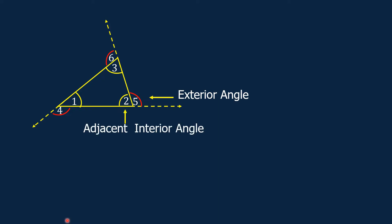Angle 2 is an adjacent interior angle of the polygon. Angle 3 is also an adjacent interior angle of the polygon, and angle 1 is also an adjacent interior angle of the polygon.